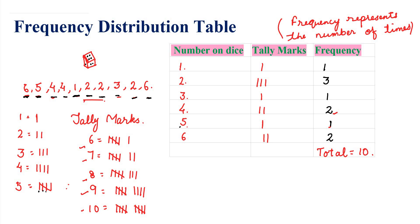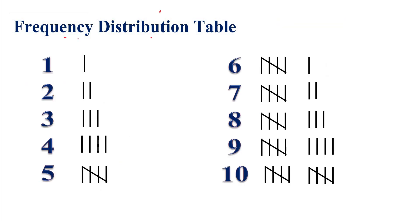Now in the frequency distribution table, if we draw tally marks: 1 is represented as 1 vertical line, 2 as 2 vertical lines, 3 as 3 vertical lines, 4 as 4 vertical lines, 5 as 4 vertical lines and 1 slanting line. So this becomes 5. And if you need to draw 11, you draw two groups of five and one more — like that. Any number can be shown in tally marks.